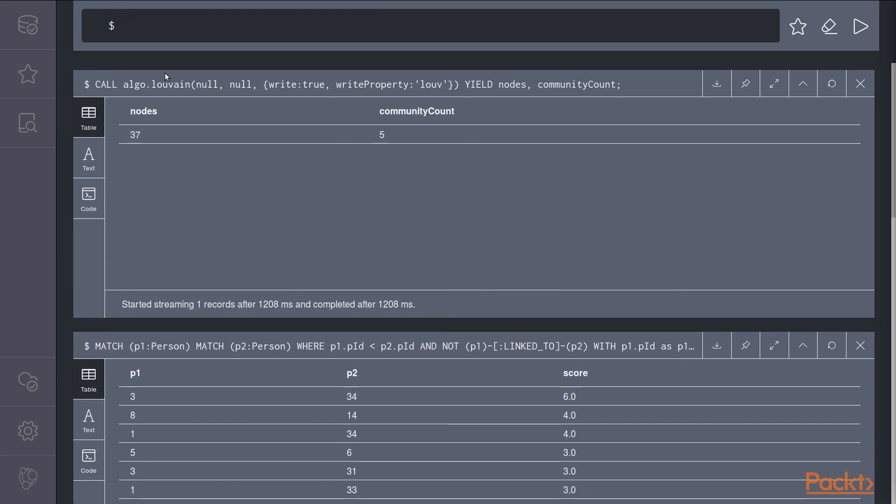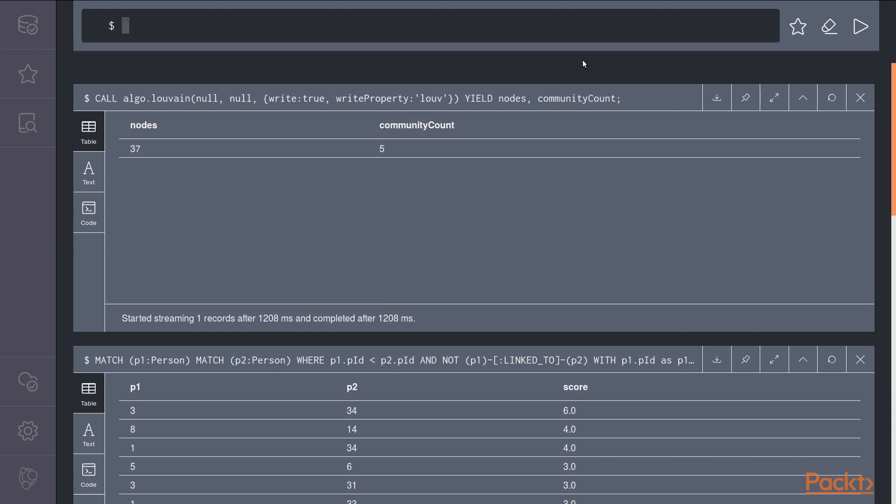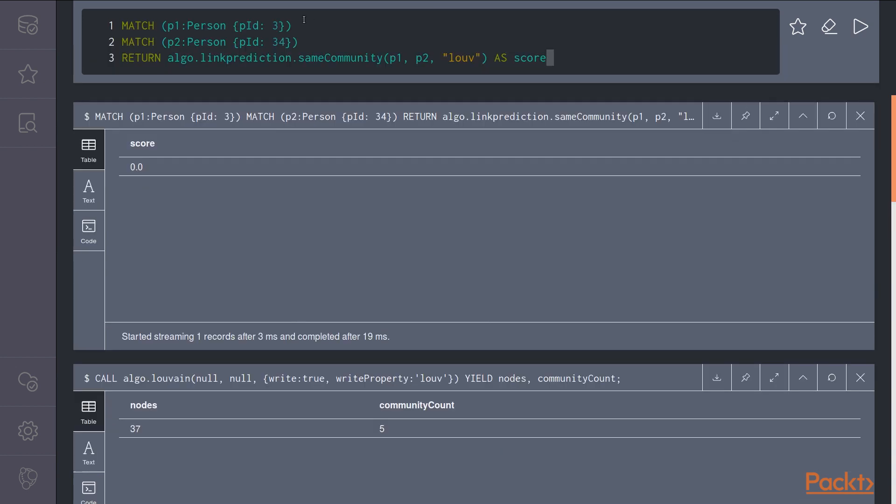Once this is done, we can use same community function of the link prediction like this. So we want to predict whether p1 and p2 will be in the same community. So with the nodes 3 and 34, it returns zero, meaning they are not in the same Louvain community.